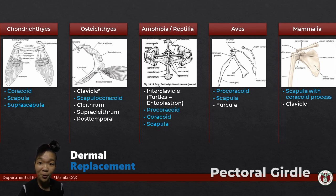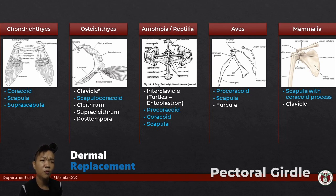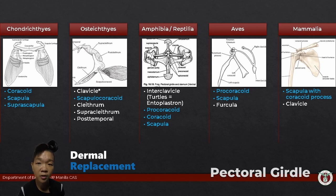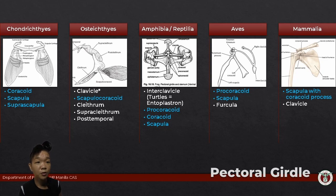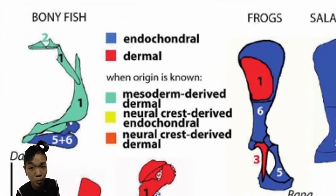Before you get overwhelmed by all these new structures, have a look again. They're more or less the same bones, arranged in different ways. From a developmental level, the main difference is dermal bones make up most of the shoulder girdles of bony fish in early tetrapods. Most of these are lost in modern tetrapods, and their shoulder girdles are mostly made of replacement bones.